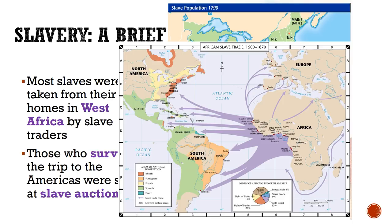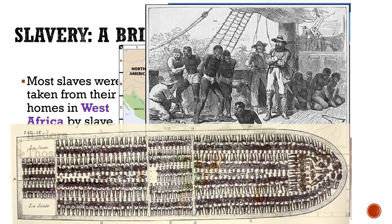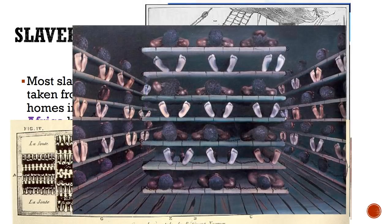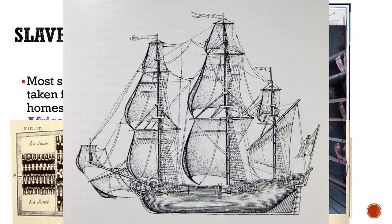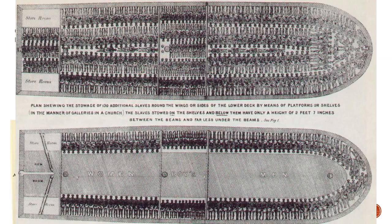Most slaves were taken from their homes in West Africa by slave traders — many of these were Portuguese slave traders. Draw a sketch of Africa next to your notes. These slave traders sent captured Africans against their will on ships. These people were packed in tightly like cargo, laying on their backs in chains side by side, to be shipped across the Atlantic Ocean. Thousands of these Africans never made it to the Caribbean islands and the 13 colonies because they died on the way due to horrendous conditions on board. If they did survive the journey, these Africans were sold to plantation owners at auctions.